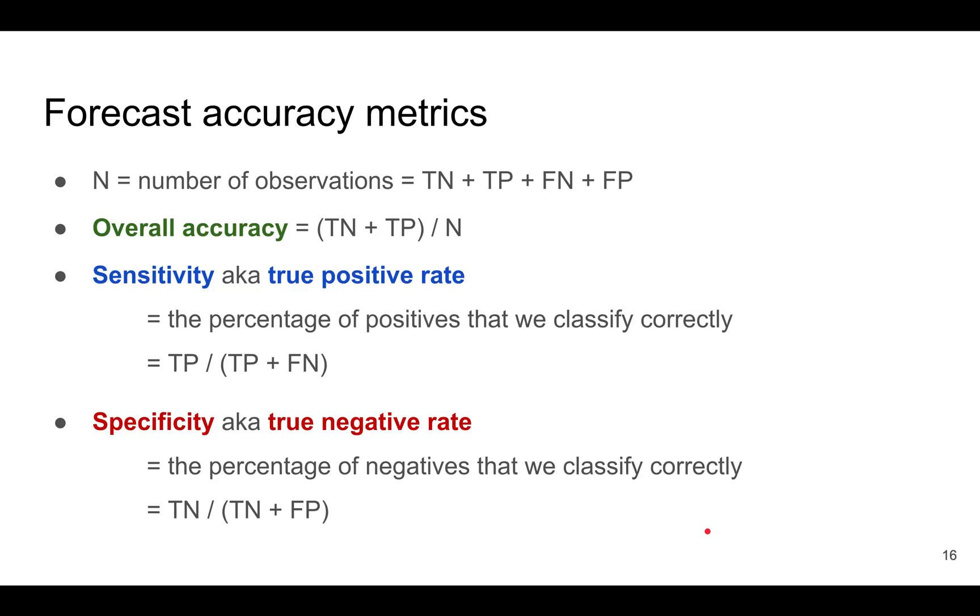Here are the three forecast accuracy metrics. n will be the total number of observations, which is the sum of the true negatives, true positives, and the false negatives and false positives. The overall accuracy would be the true negatives plus true positives divided by n.